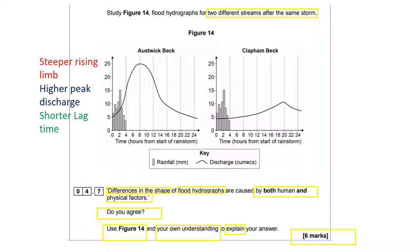The three points to look at in terms of differences in shape: we've got Oswick Beck and Clapham Beck. Oswick Beck has a steeper rising limb — it rises far faster than Clapham Beck. It also has a higher peak discharge, up at around 25 cumecs compared to around 10 for Clapham Beck. And it has a shorter lag time — the difference between peak rainfall and peak discharge is far, far shorter in Oswick Beck compared to Clapham Beck, as you can see with the laser pointer. Those are the differences in shape.